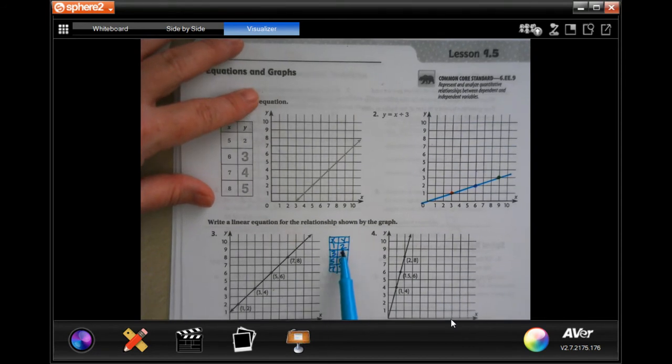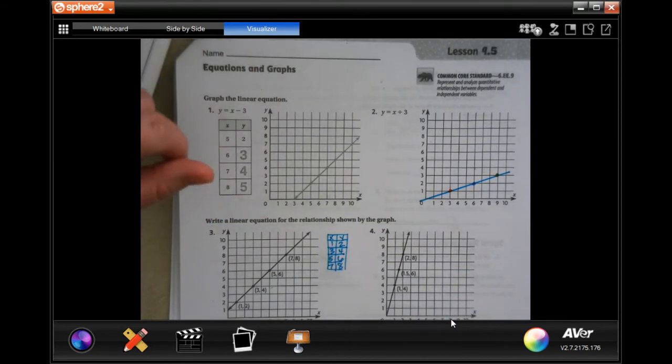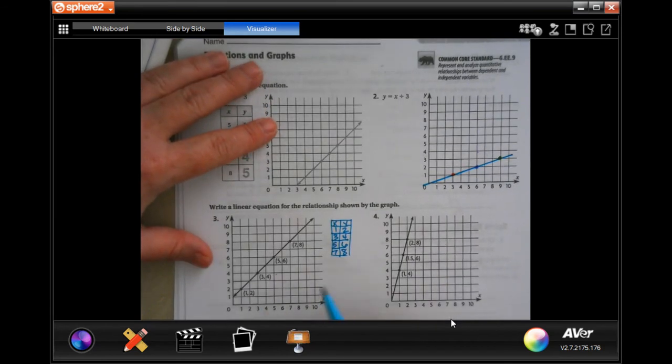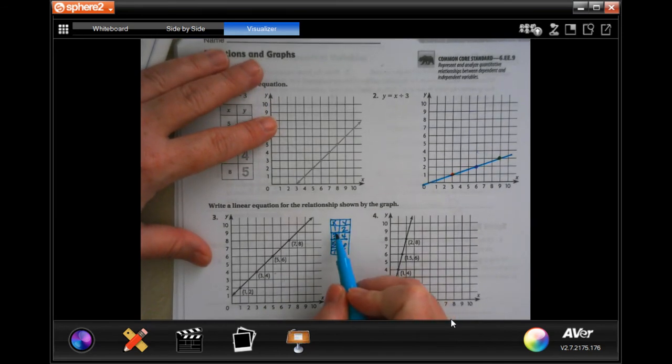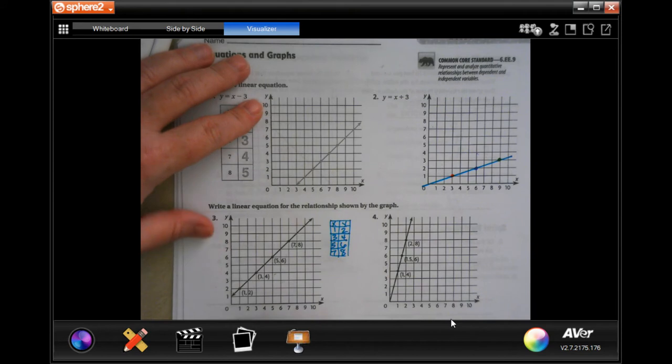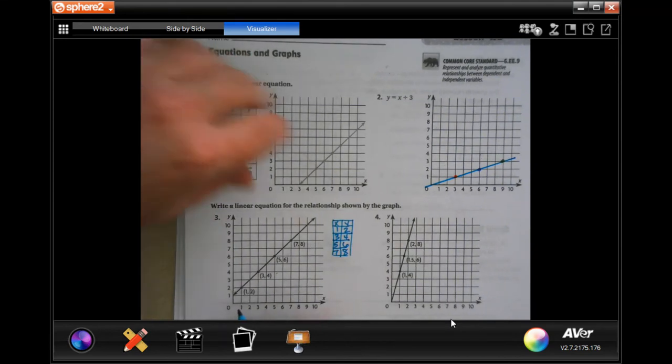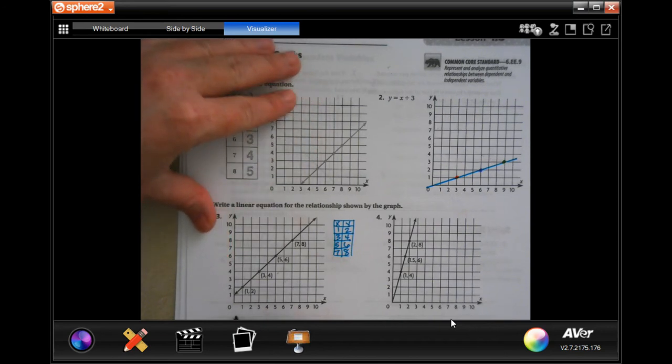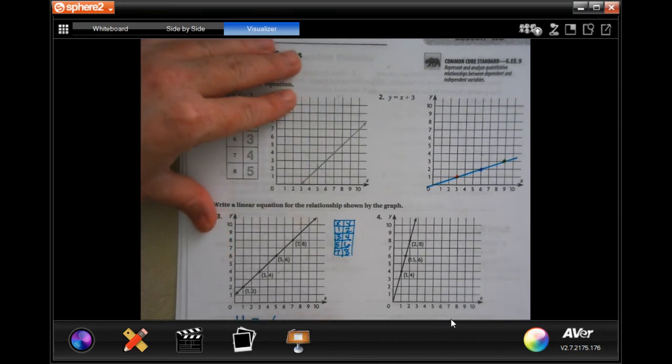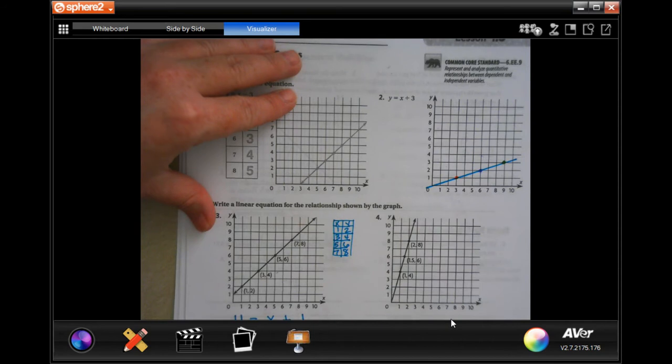You will notice that to get from x to y we're just going to add one. So on every single one of these, one plus one is two, three plus one is four, five plus one is six, seven plus one is eight.